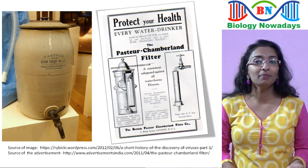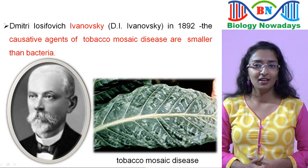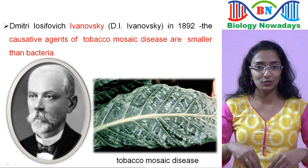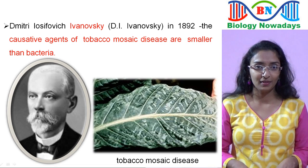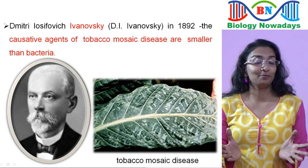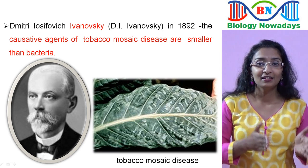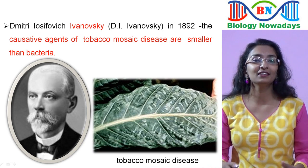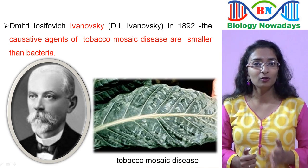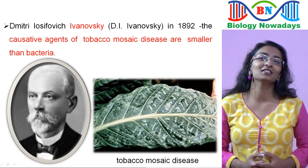In 1892, Russian biologist Ivanovsky used this filter to study the leaf mosaic disease of tobacco. He crushed some infected tobacco leaf and took the extract, then passed it through the Pasteur-Chamberland filter. He expected the bacteria causing the disease to be trapped in the filter. But surprisingly, the extract after passing through the filter remained infectious — the filtered liquid was still able to cause infection in a healthy tobacco plant. This meant the causative agent was not bacteria but something smaller that could easily pass through the filter.